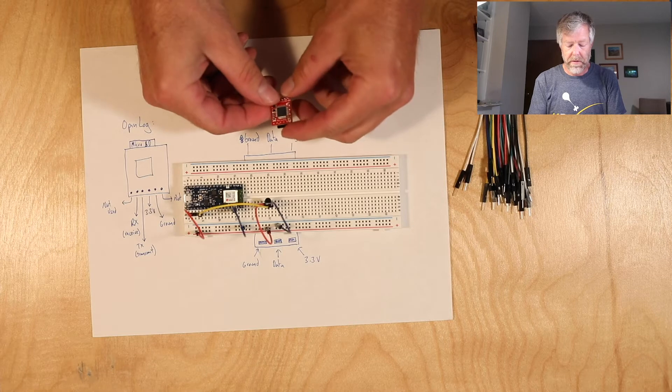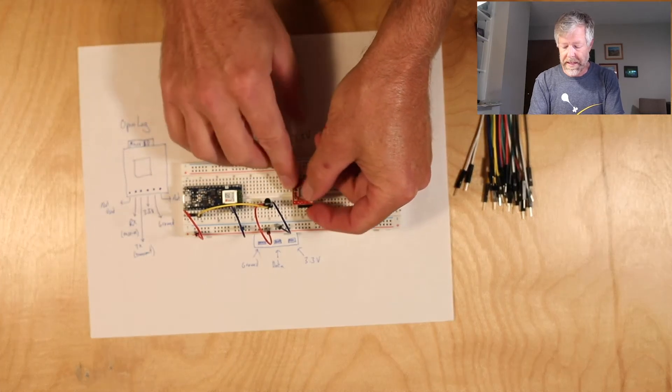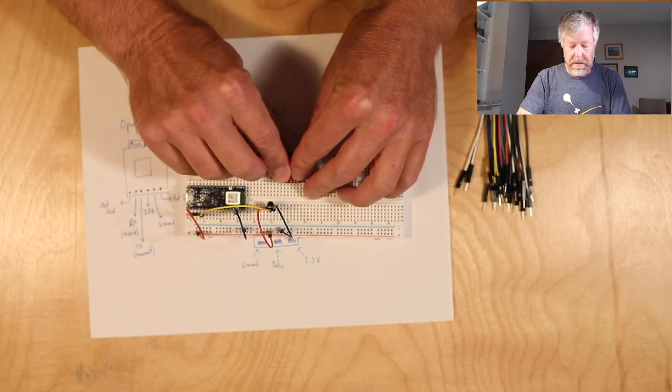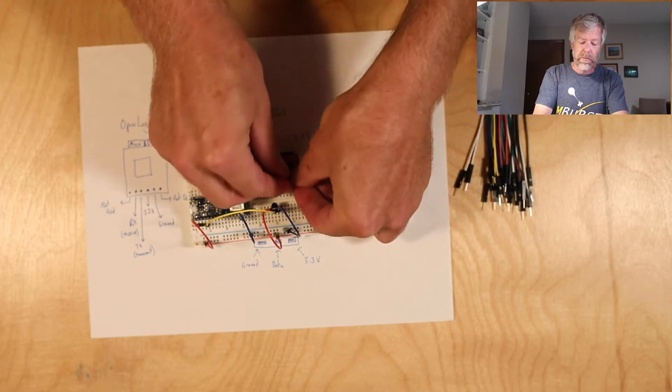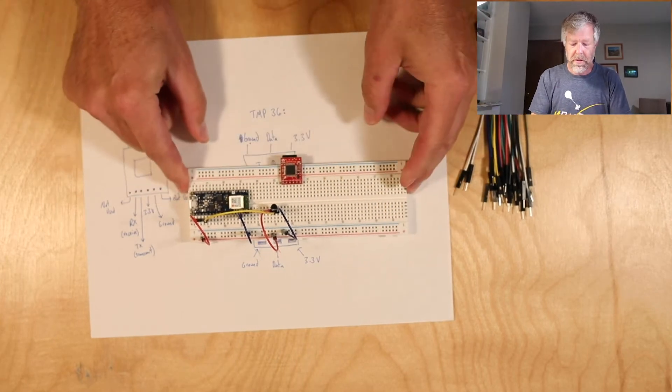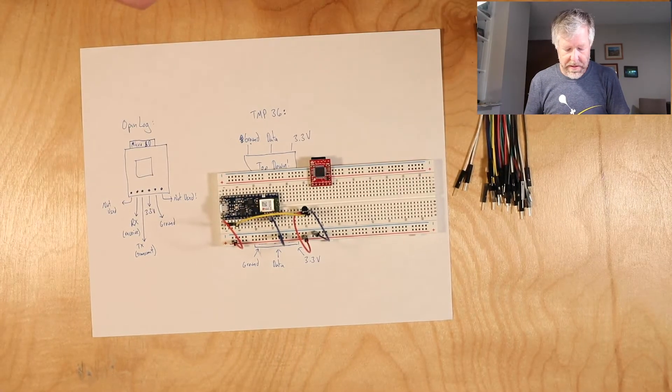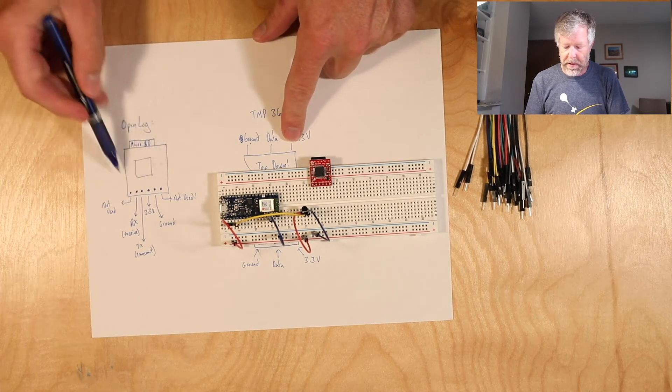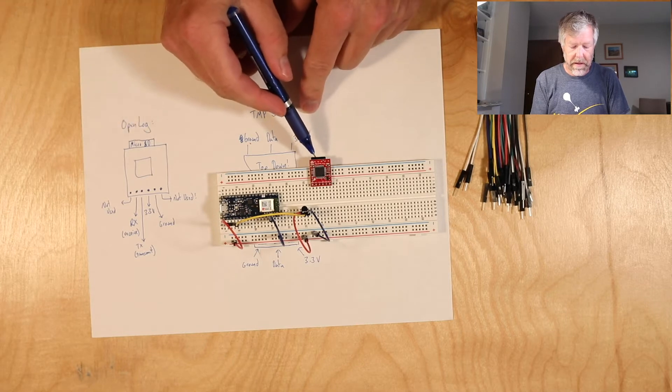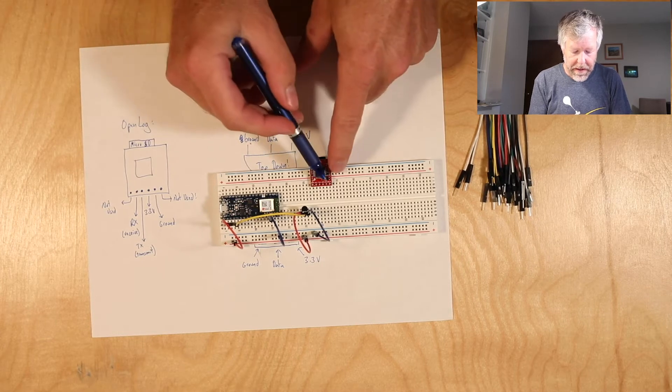So what we're going to do is plug this into the board like so. Let's plug it in this way. Oh my goodness, once again it doesn't want to go in. This breadboard is so painful. All right, so now you can see that this is the OpenLog here. The microSD card is there and then all the pins here.